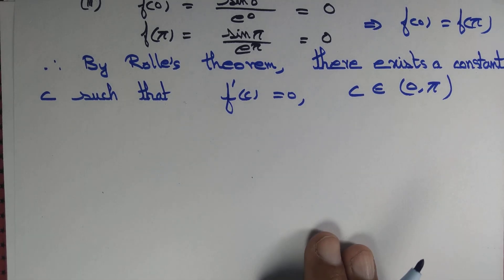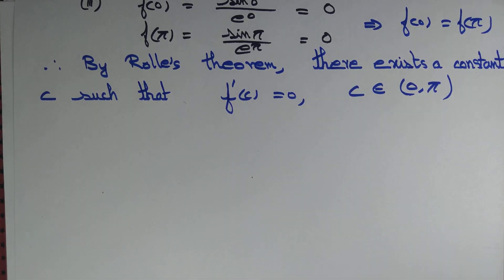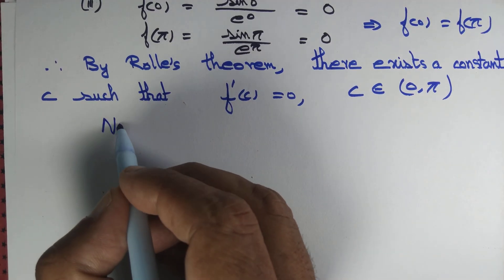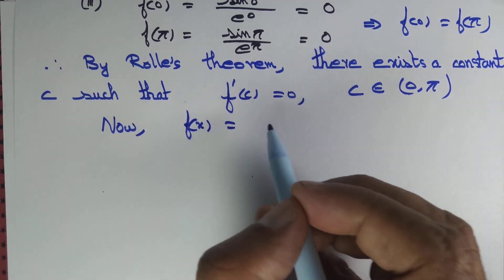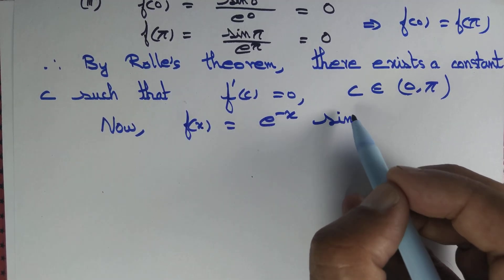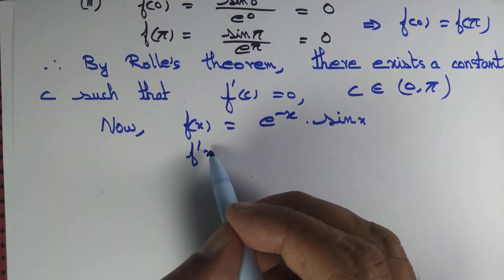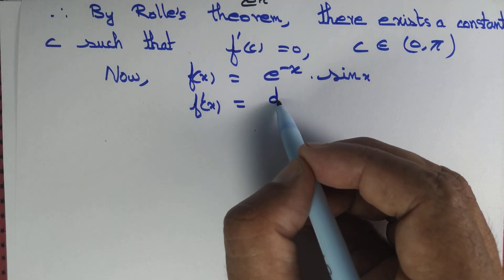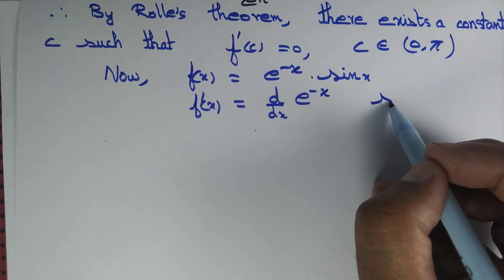Let's find such a constant c. Rolle's theorem guarantees the existence of such a constant, so we should be able to find it. Now, f(x) = e^(-x) · sin(x). It is a product of two functions, so we can find f'(x) using d/dx of e^(-x) · sin(x).